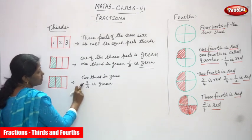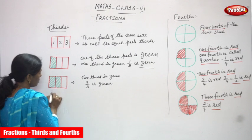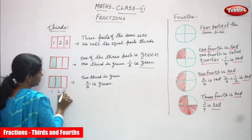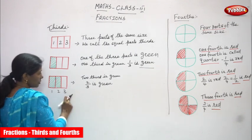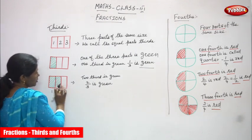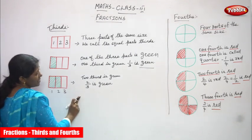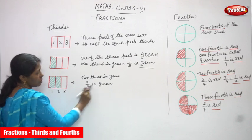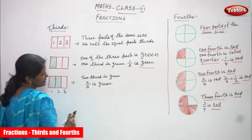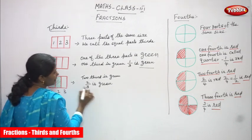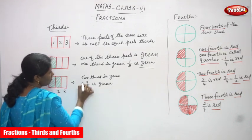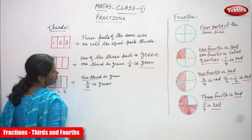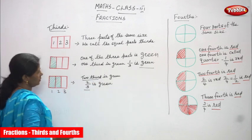We can call it as two by three, because the total parts are: first part, second part, third part — three parts. But I shaded only two parts in green color. That is two by three. Two by three is a fraction — we can call it as two thirds.